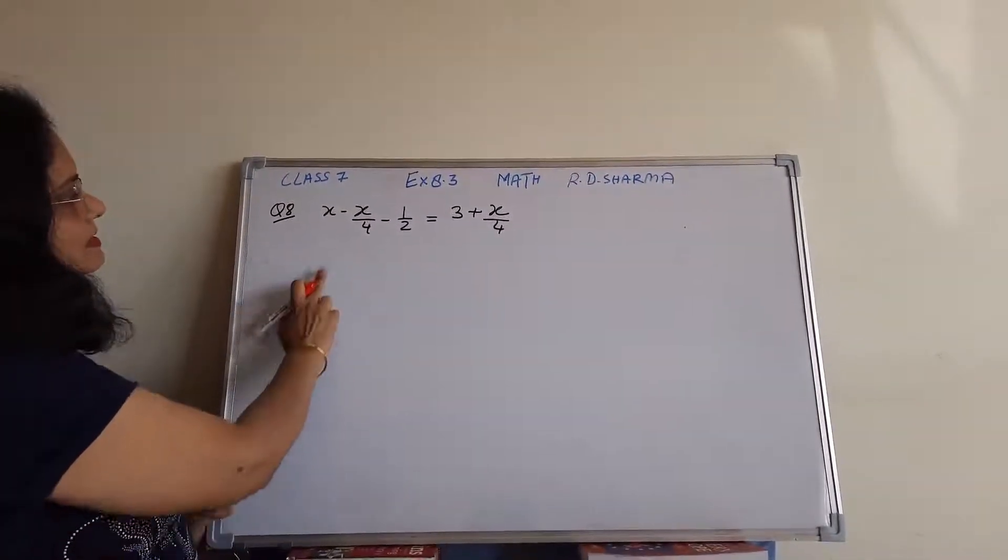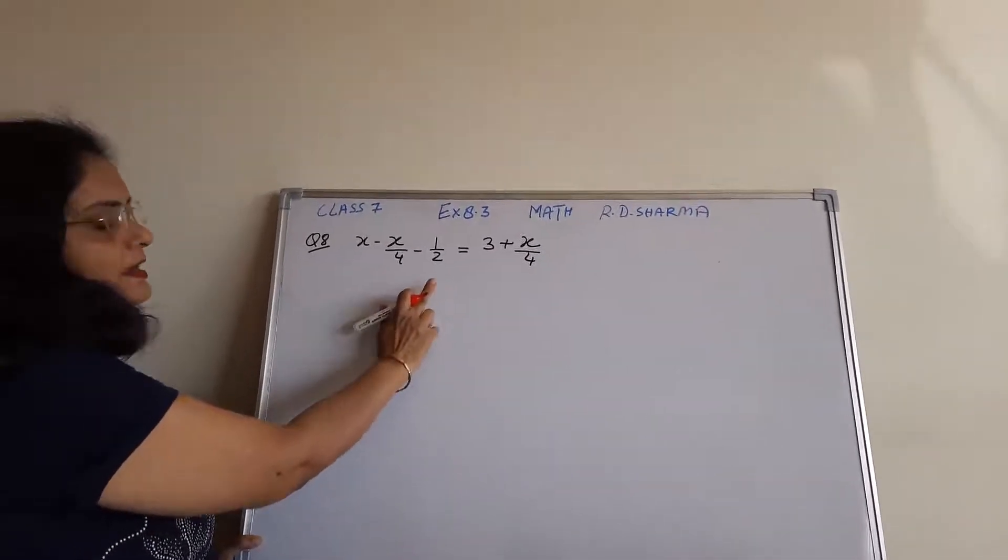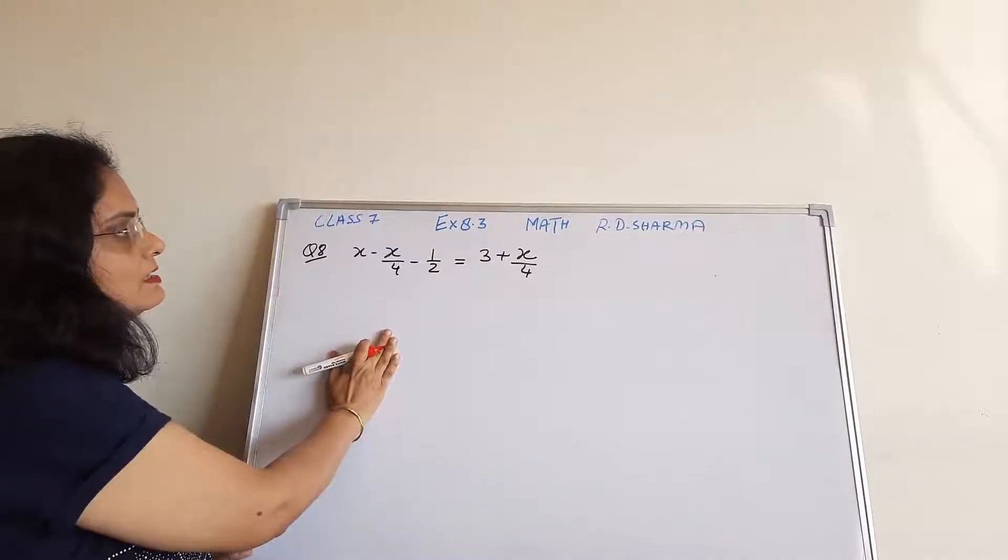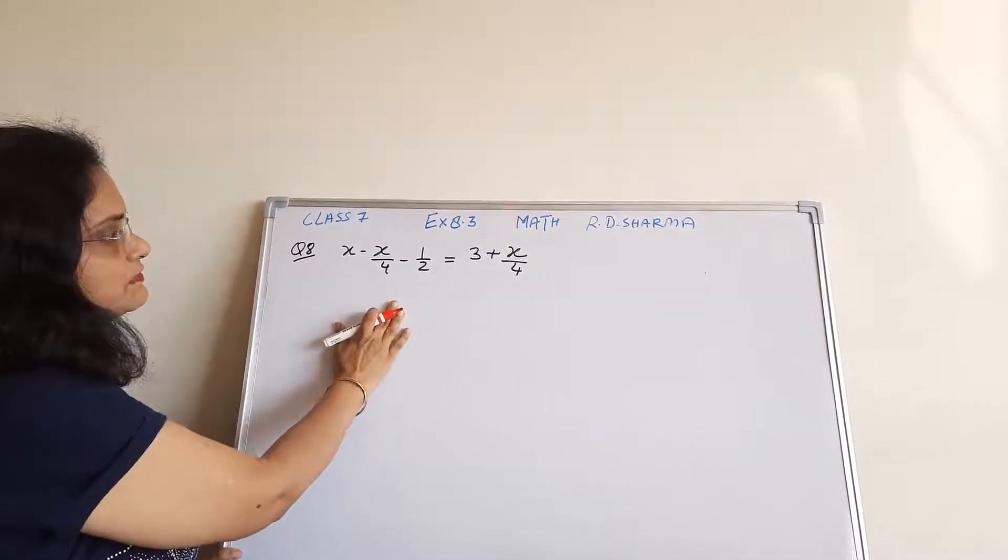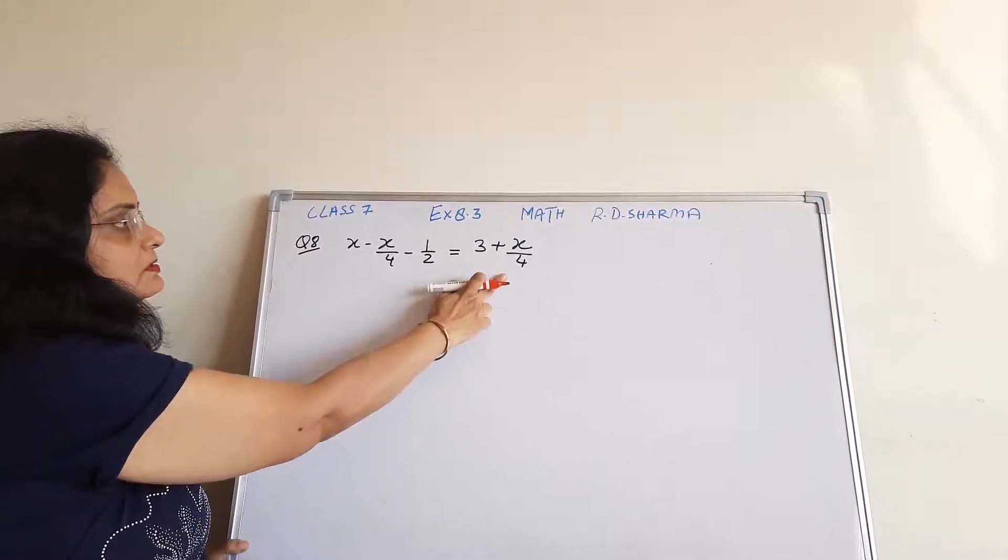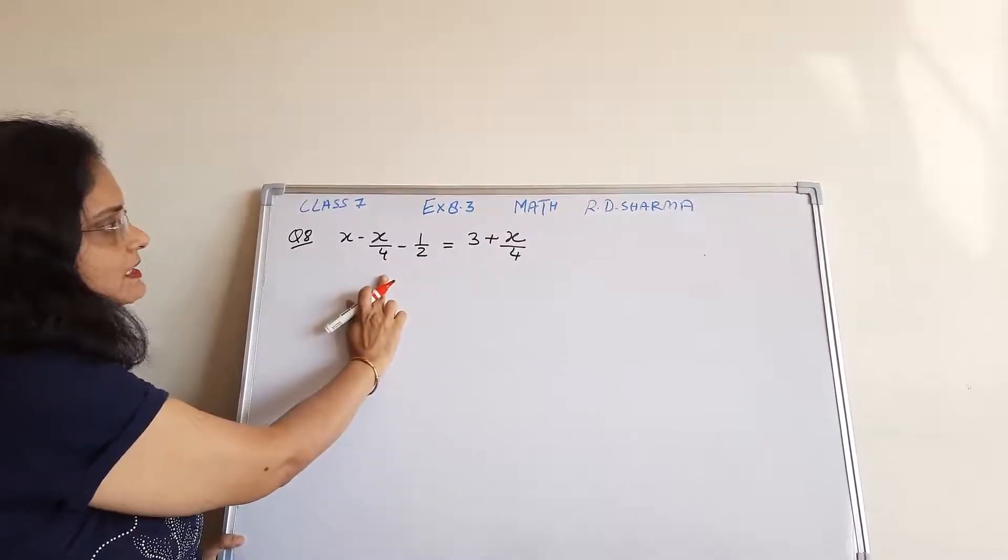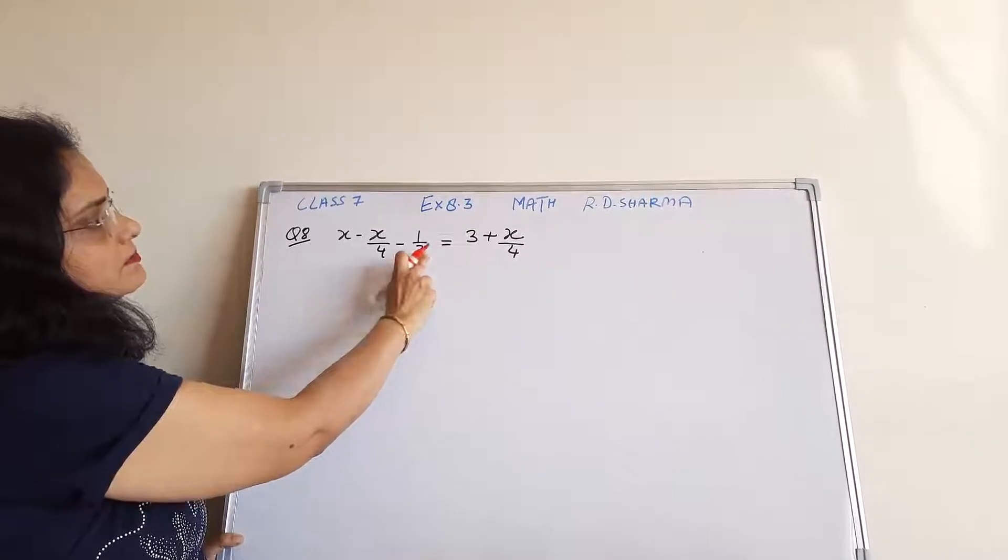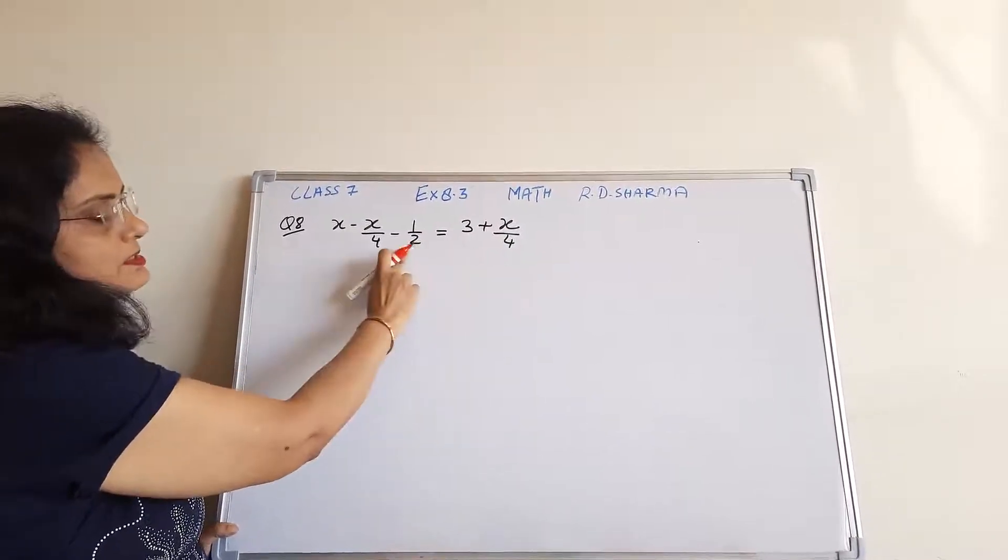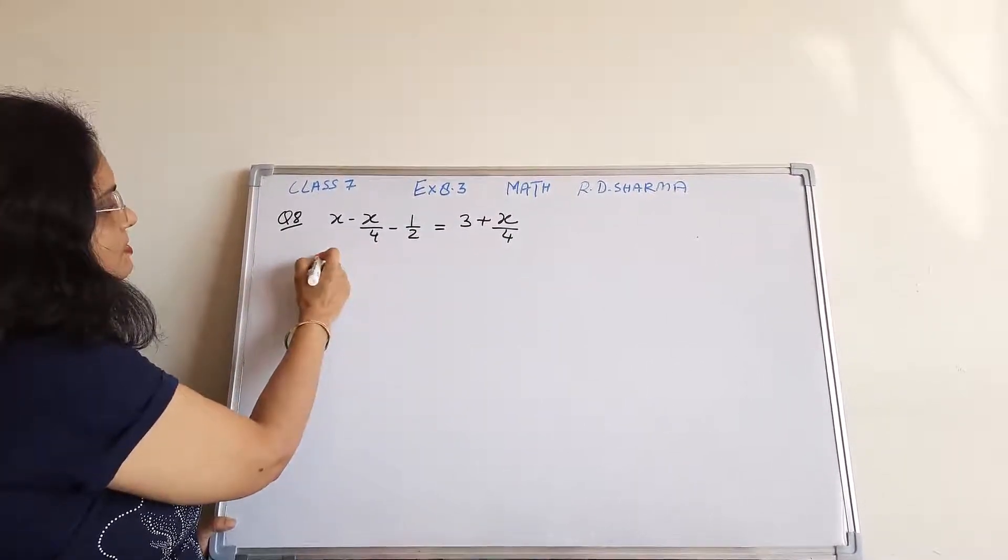Now here we see we have variable terms and we have constant terms. So first we will start by transposing. It means we will shift the variable terms on the left hand side with a change in sign and we will shift the constant term on the right hand side with a change in sign. Let's do it.